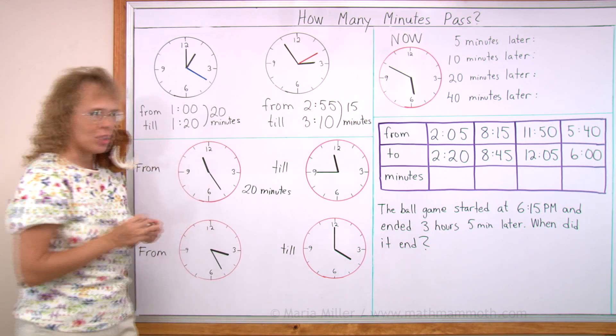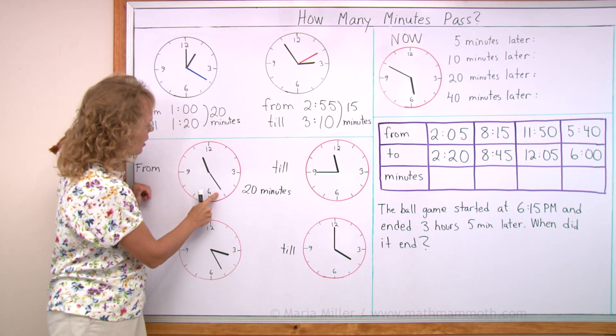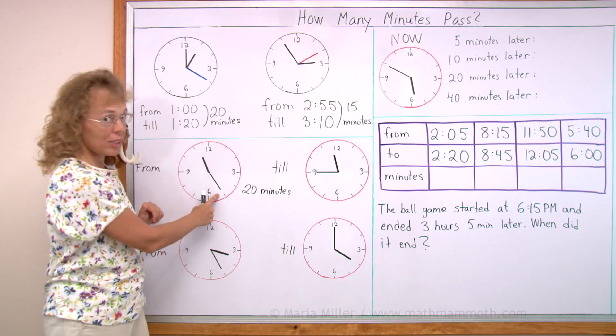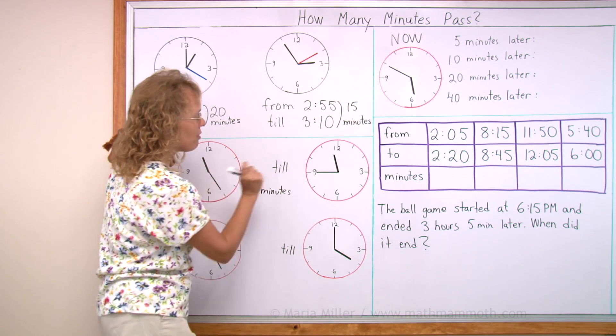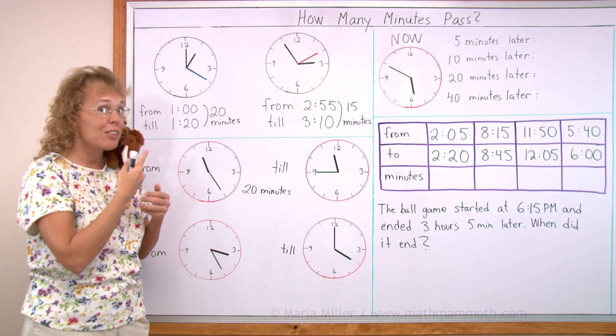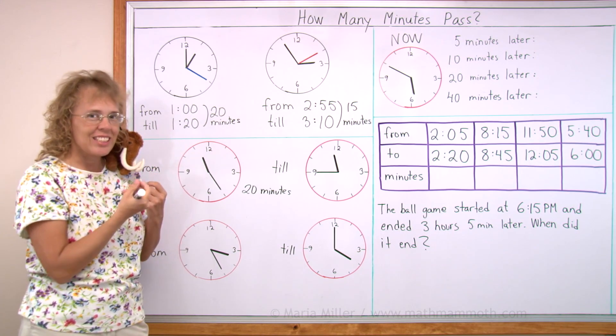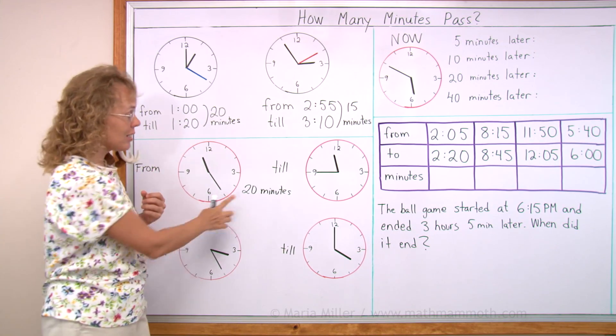You can also look at the actual times. This time is 11:25. This time is 11:45. 25, 45. The difference in those minute amounts is 20, right?